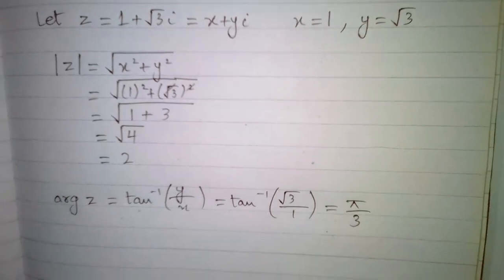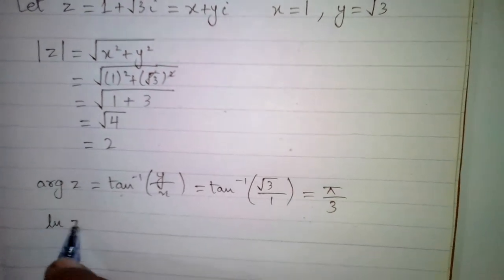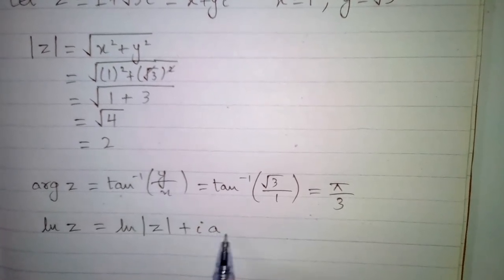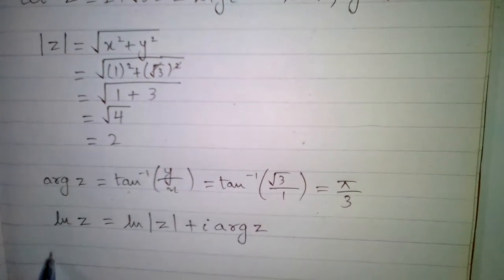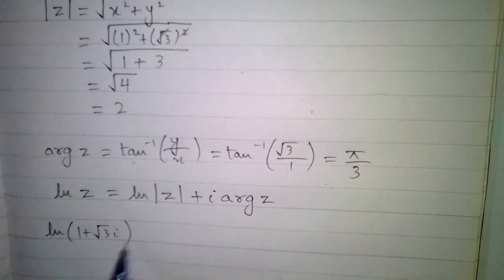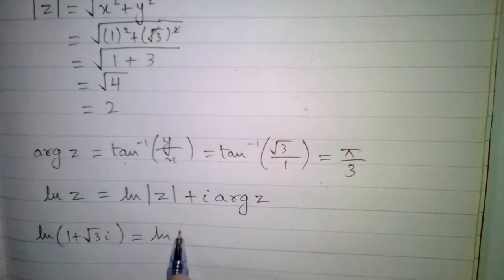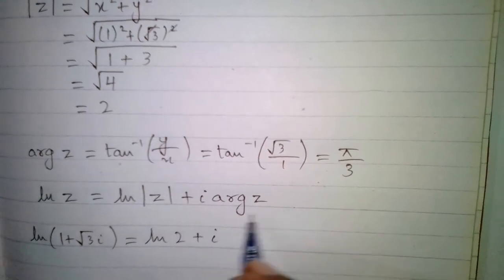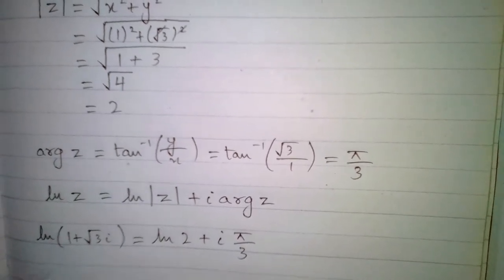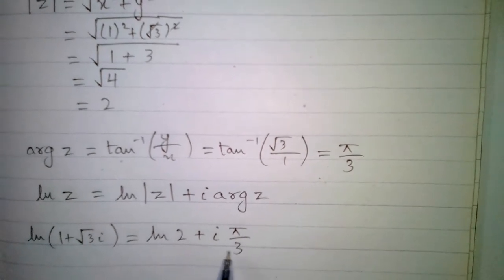Now we can put the values of modulus of z and argument of z into the formula. So ln of z is equal to ln of the modulus of z plus iota times the argument of z. Since z is 1 plus root 3 iota, ln of 1 plus root 3 iota equals ln of 2 plus iota times pi by 3. So the natural log of 1 plus root 3 iota is equal to ln 2 plus iota times pi by 3.